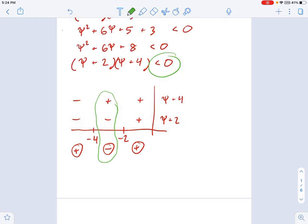So I'll just keep it in green. Your solution would be written this way: negative four to negative two. I'm using curvy parentheses because it is not inclusive. It's less than zero, not less than or equal to.